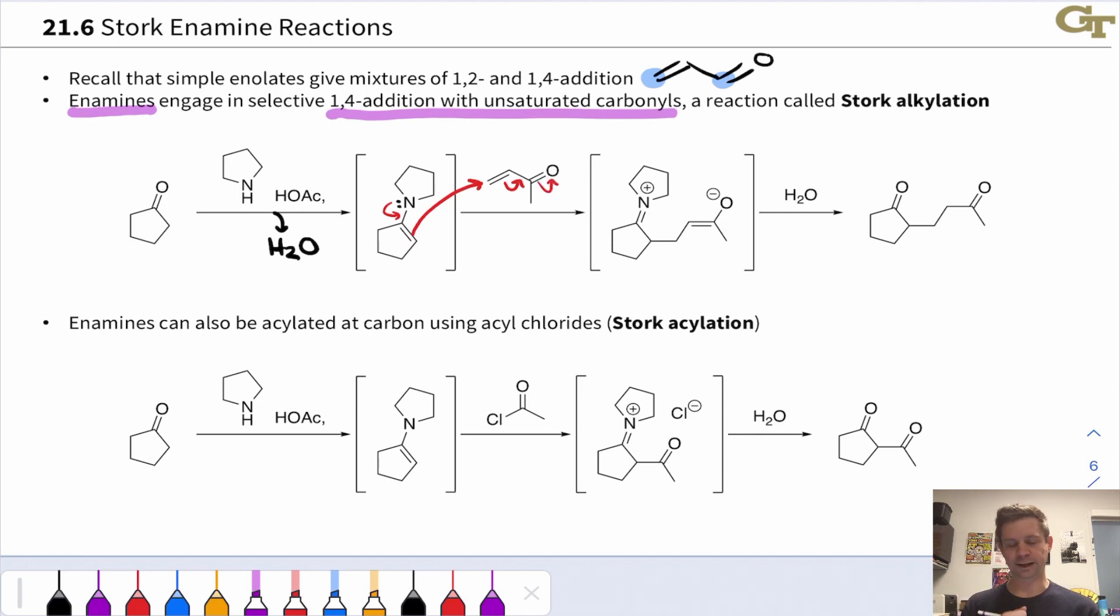Analogous to conjugate addition type of electron flow that we've seen previously. So we get on one end, on the left half of the molecule, we get an iminium ion. And on the right half, we get an enolate.